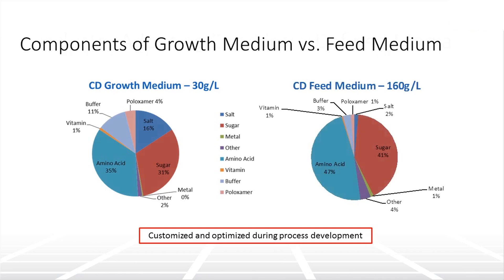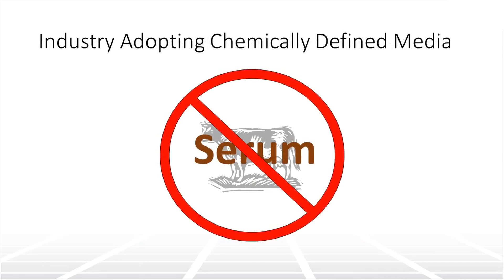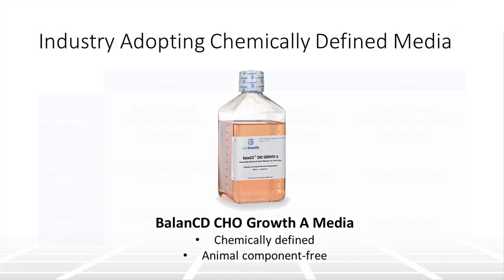Most modern cell culture processes utilize this fed-batch production method. Historically, many media components were derived from animal sources. Regulatory bodies are concerned about animal-derived materials, primarily due to virus contamination issues. Thus, the industry has moved toward media compositions that are chemically fully defined and free of animal-derived components.